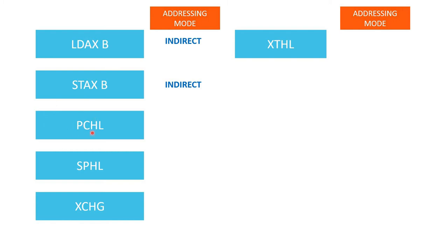PCHL: the data is present in the HL pair, which is a register, so it has register mode of addressing. But at the same time, PCHL itself is an instruction that carries no operand. After decoding this instruction, the microprocessor already knows what to do — it copies the content of HL into the program counter — so you can also say this is implicit mode of addressing. The same applies to SPHL: it has both register mode and implicit mode of addressing.